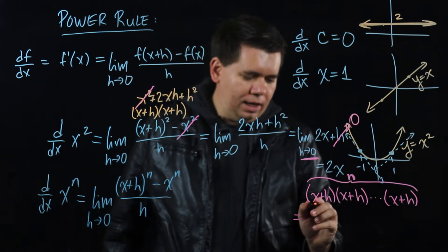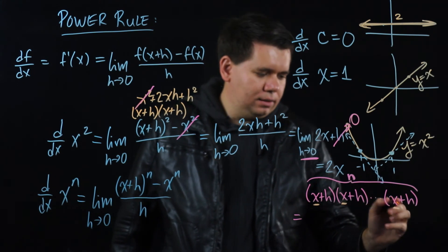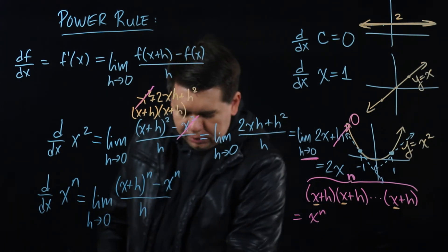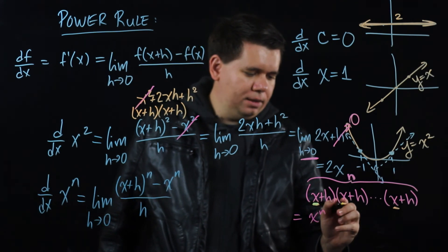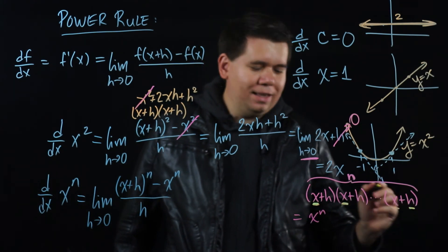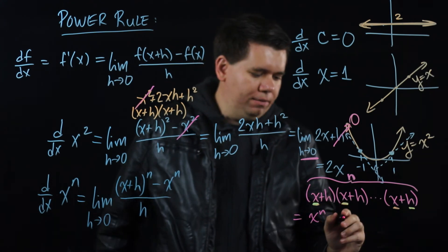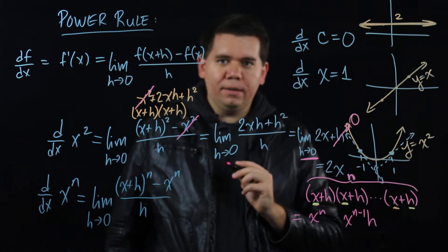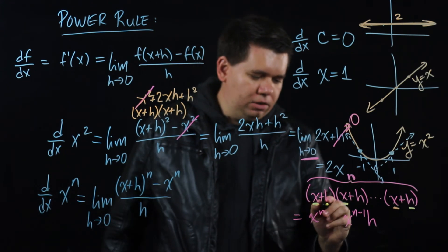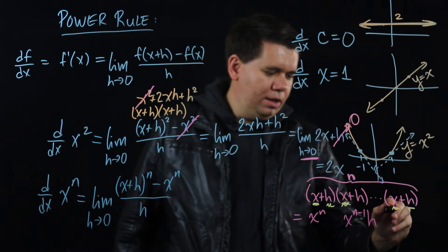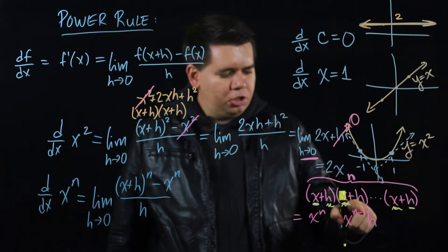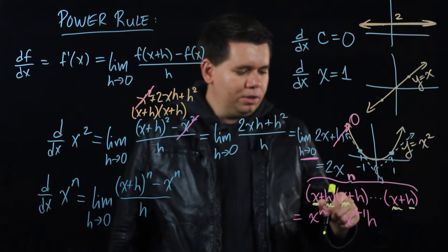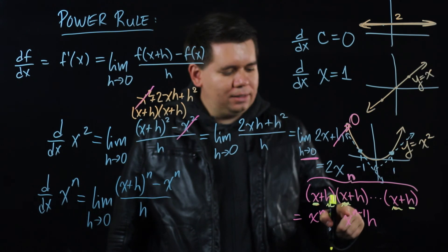This is all the possible ways of taking a term from each of these and multiplying them together. For example, you could do the x times the x times all the x's, and all those together would give you x to the n. Or what you might do is you might want to do this x times this x times all the x's, but then multiplied by the last h. Then you only have x to the n minus 1, n minus 1 copies of x and an h at the end.